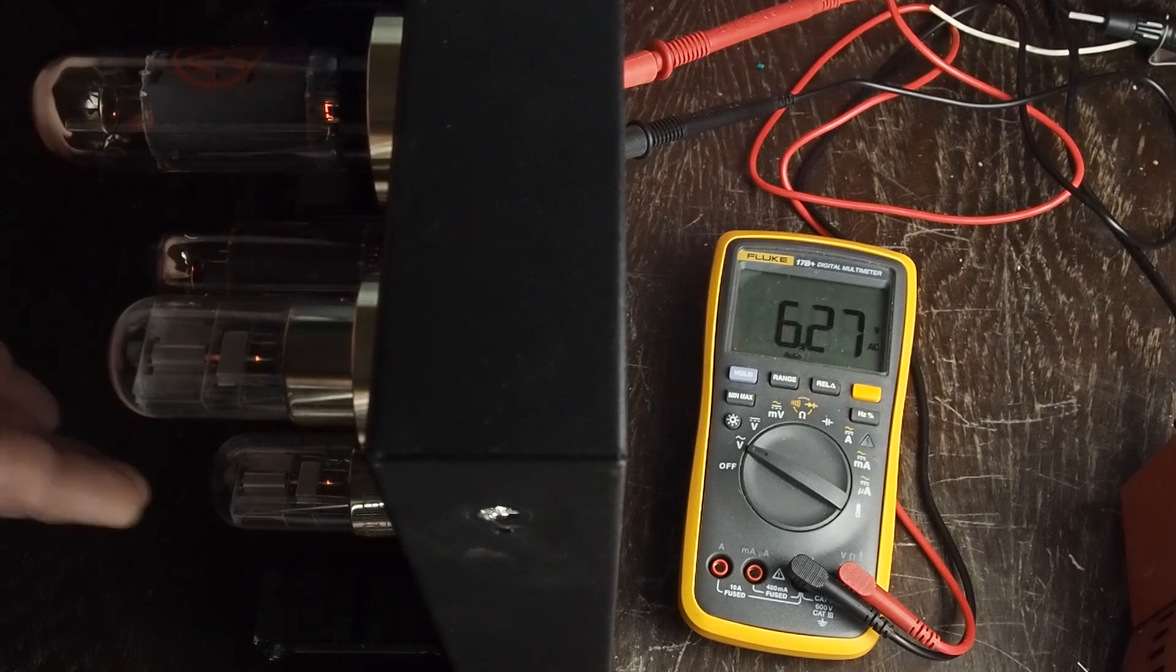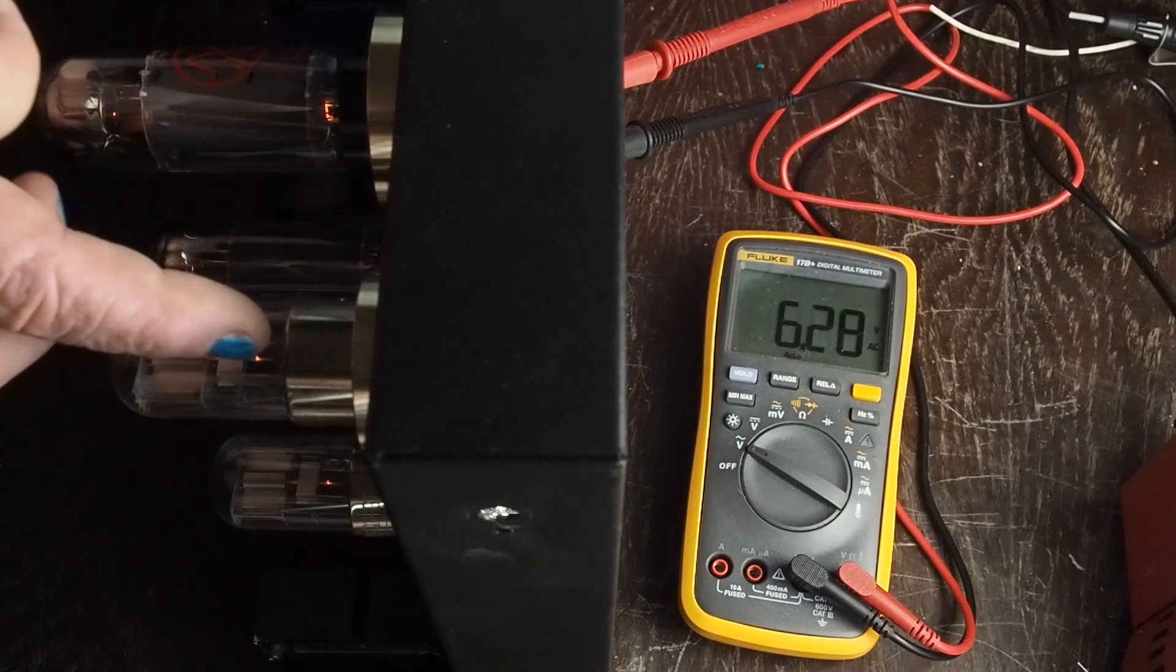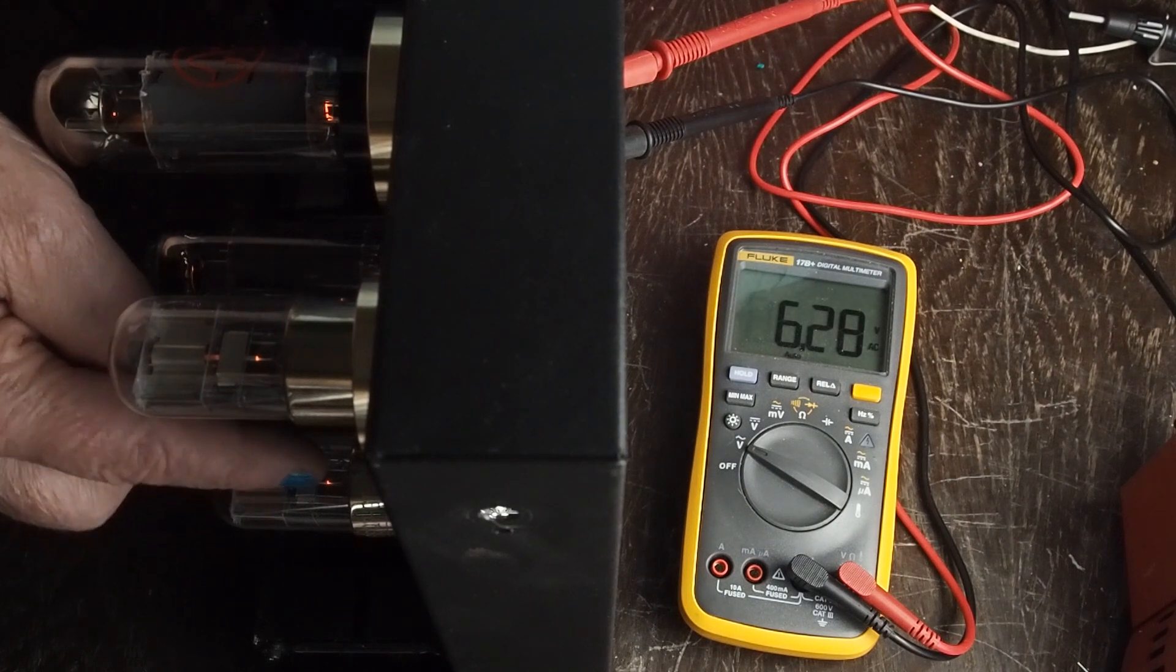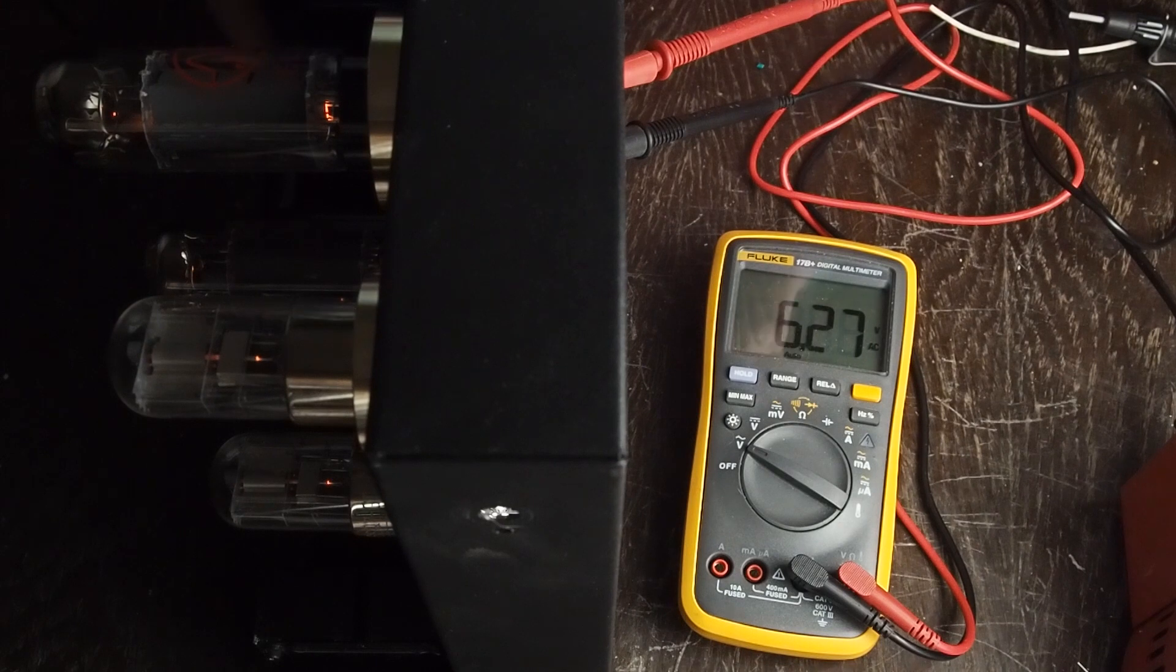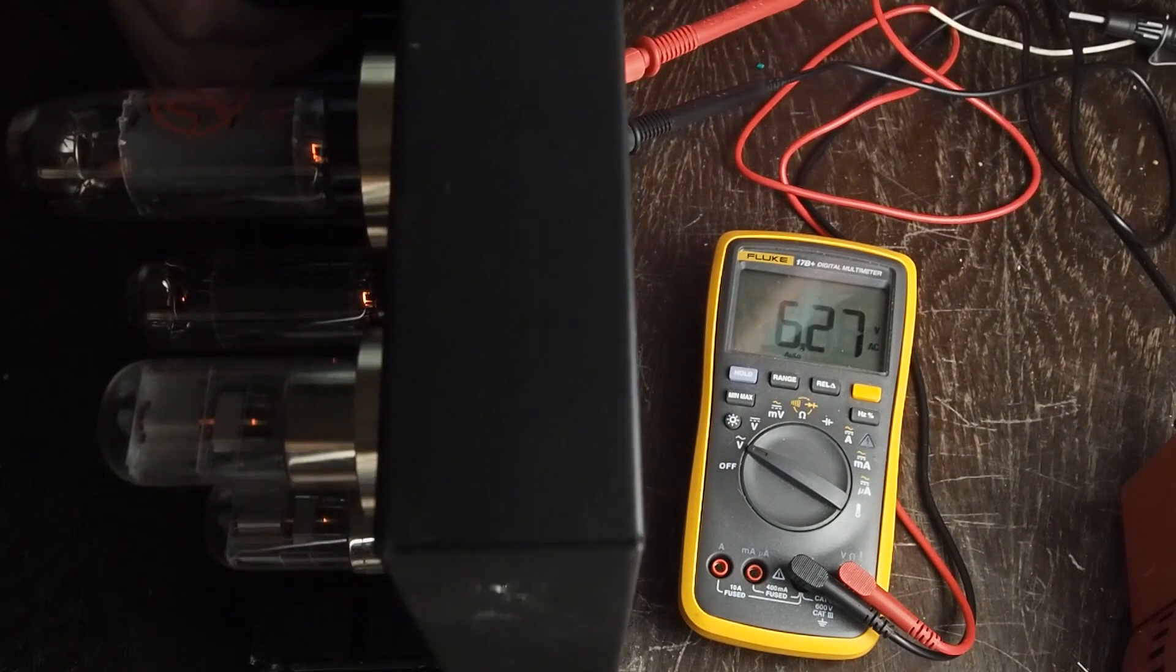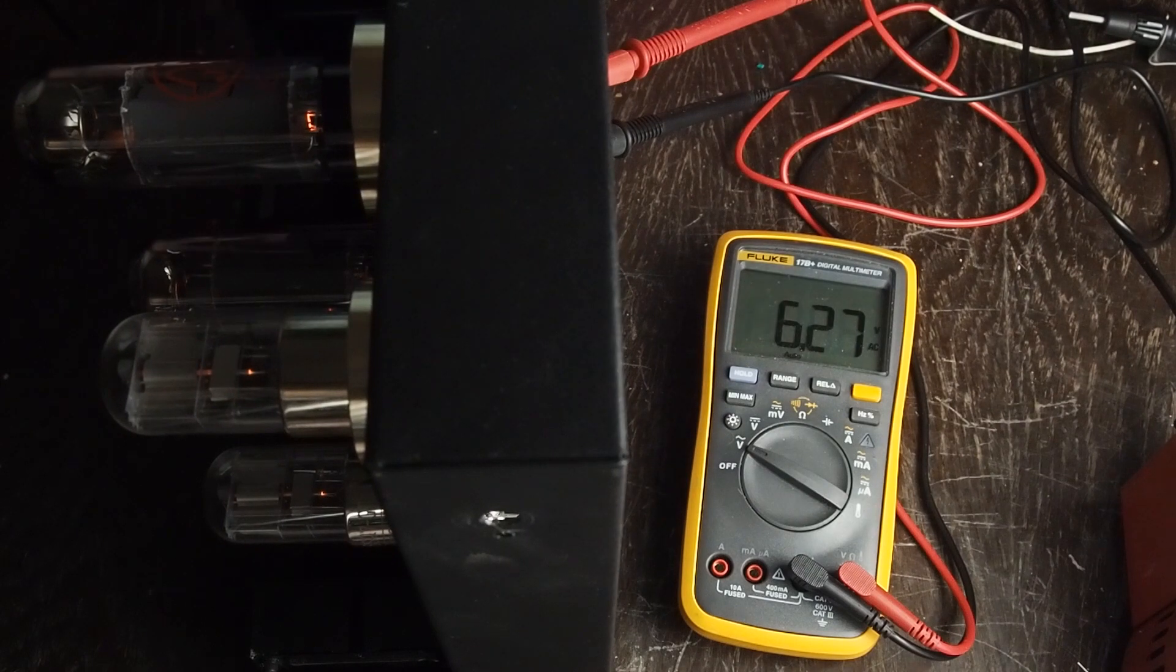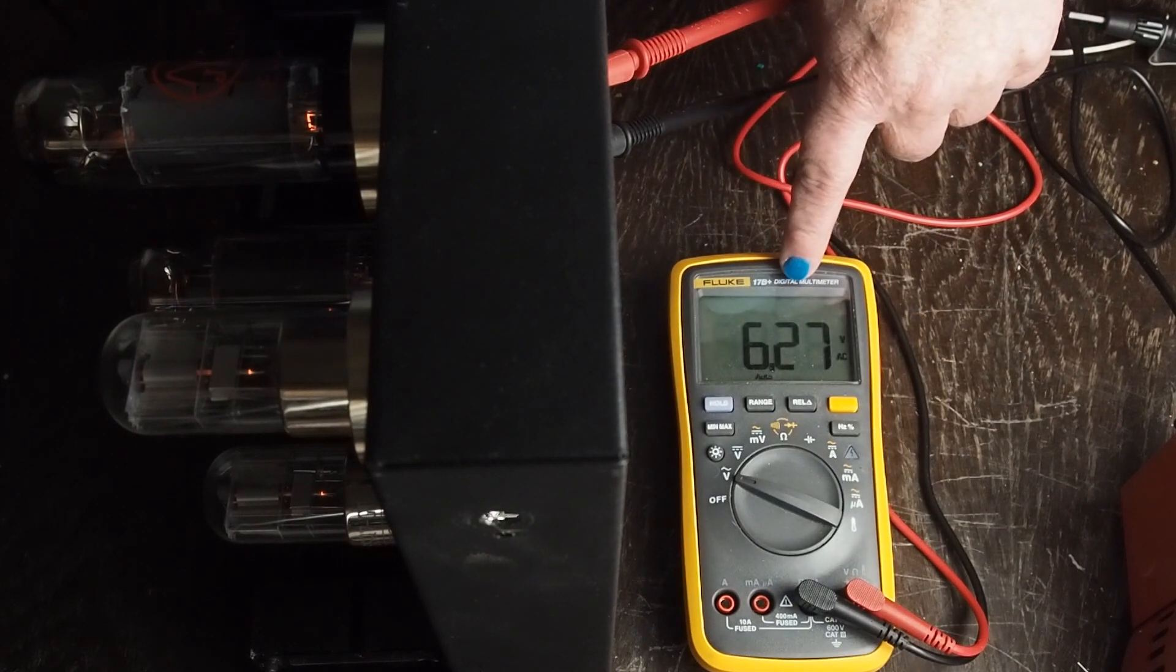So we got our two 6SQ7s and our two EL34s, and as you can see all four of the heaters have their little elements glowing. Let's see if I can tilt this one up where you can see that back tube, but you can see it's glowing too. So we know we have the heaters wired up correctly and we're right at 6.3 volts.